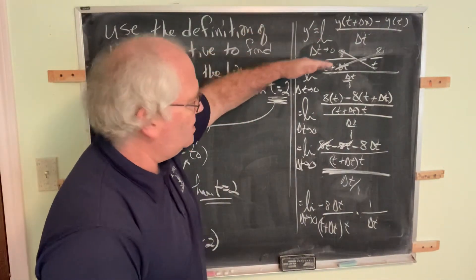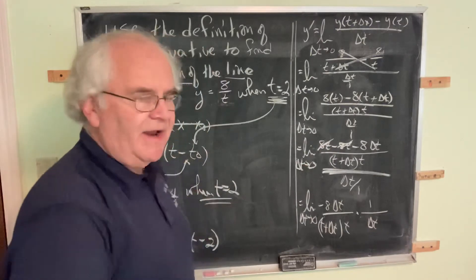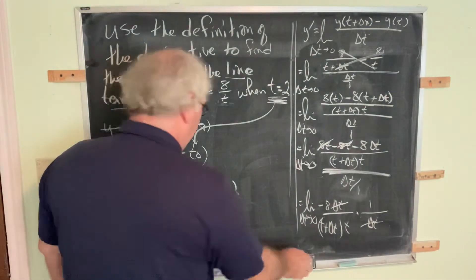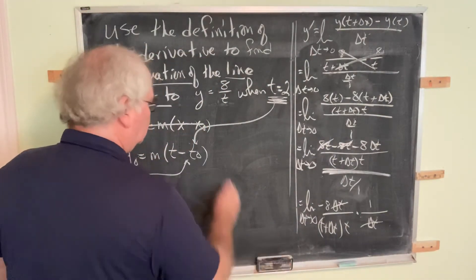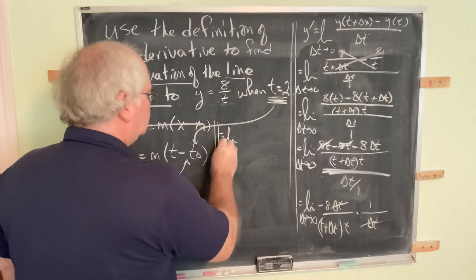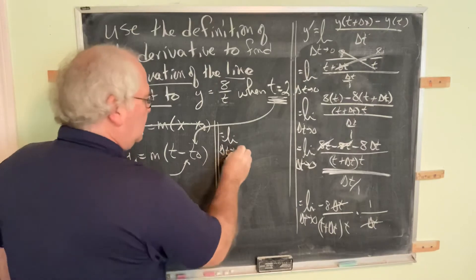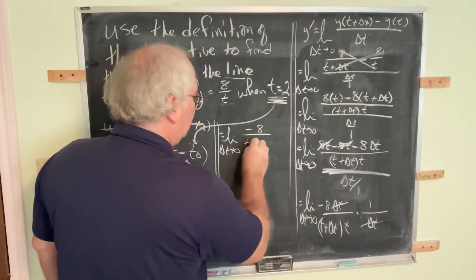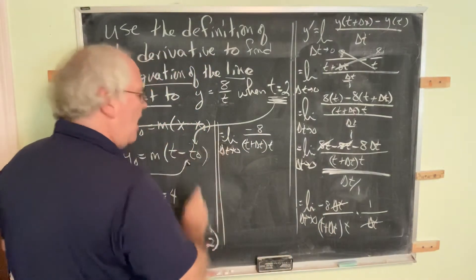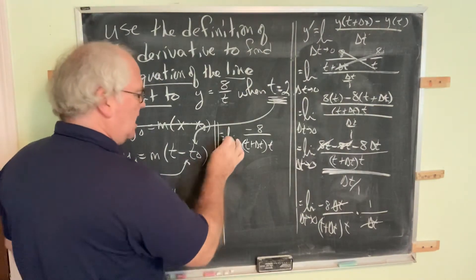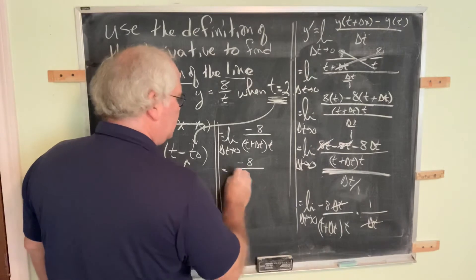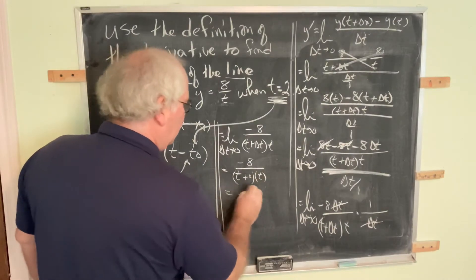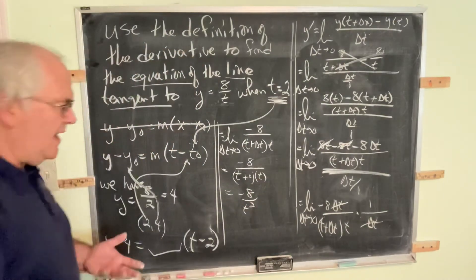Whenever you get zero divided by zero, you do a boatload of algebra, simplify, and try again. The Δt's cancel, and as Δt goes to zero we're left with negative 8 over (t + Δt)·t. Now let Δt go to zero: this becomes negative 8 over t times t, which is negative 8 over t squared. That is the derivative of the original given function.